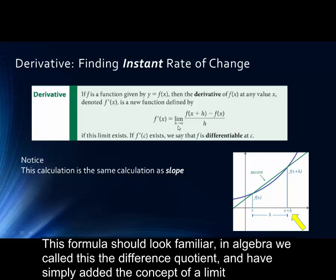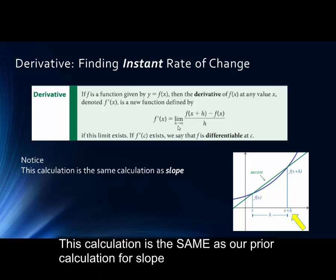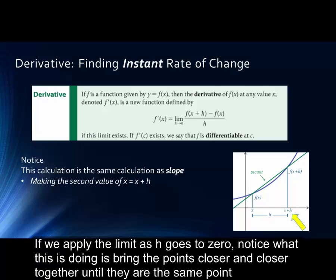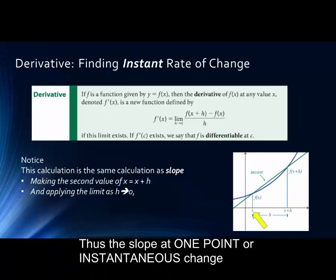This calculation is the same as our prior calculation for slope. Except here, our second value is not a different x value, but the first x value plus a difference or a distance of h. If we apply the limit as h goes to 0, notice what this is doing is bringing the points closer and closer together until they are the same point. Thus, we have the slope at one point or instantaneous change.